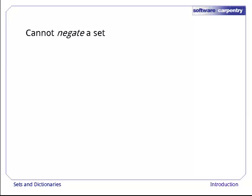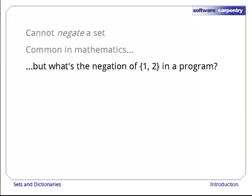One operator that isn't in this list is not. Mathematicians are quite comfortable negating sets. For example, the negation of the set 1, 2 is all integers that aren't 1 or 2. This is a lot harder to do in a program, though.